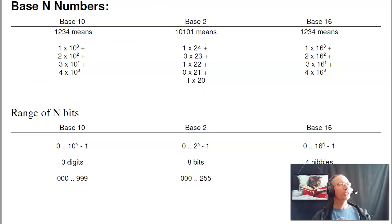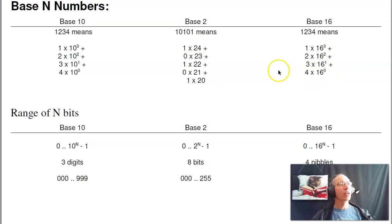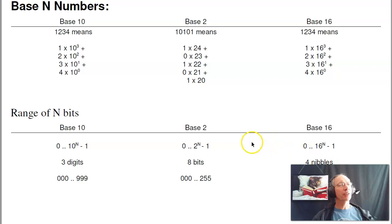In terms of base 2, base 10, and base 16: in base 10, the number 1234 means 1,000 + 200 + 30 + 4. In base 2, everything goes by powers of 2. In base 16, everything is powers of 16. Most important is the range of bits. If I have a 3-digit base-10 number, I can represent 0 to 999 — that's 10 cubed minus 1. In base 2, 8 bits can represent up to 2 to the 8th minus 1, which is 255. In base 16, 4 nibbles or 16 bits can go up to 65,535. This is important because if you try to store data that's out of range, it will just wrap around — it does clock math.